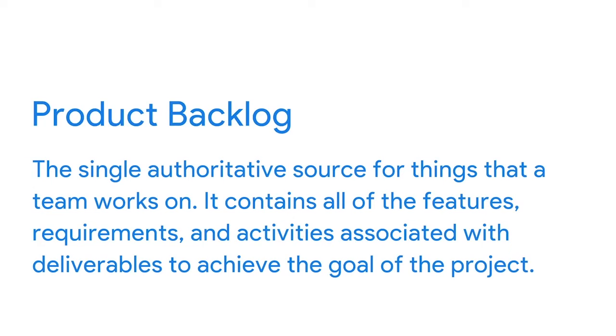In this program, we've introduced you to lots of project management artifacts, such as project plans, statements of work, RACI charts, and more. Now, we'll review an important artifact of the Scrum framework: the Product Backlog. We defined the Product Backlog as the single authoritative source for things that a team works on. It contains all of the features, requirements, and activities associated with deliverables to achieve the goal of the project. The traditional, non-agile project management equivalent would be the set of project requirements.